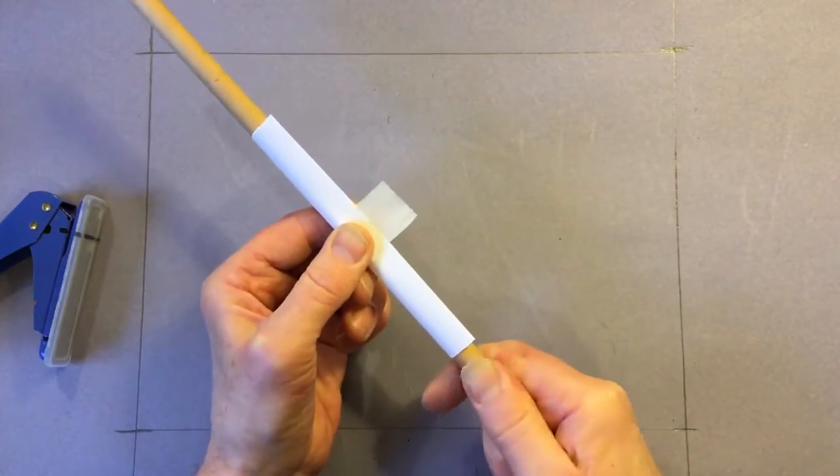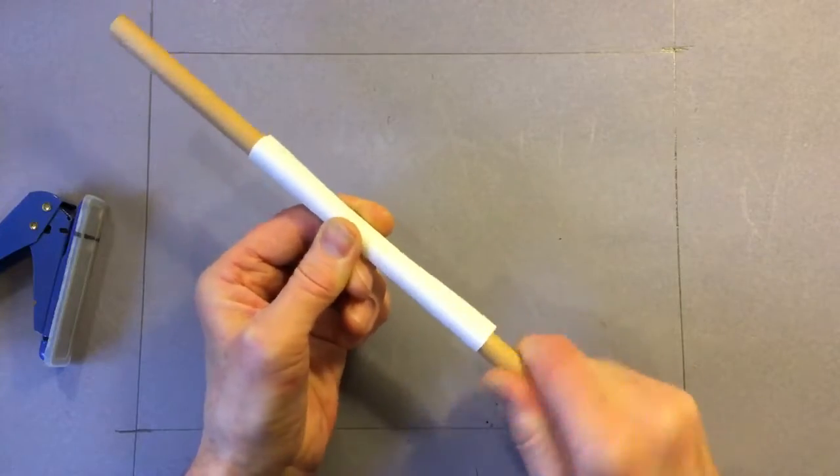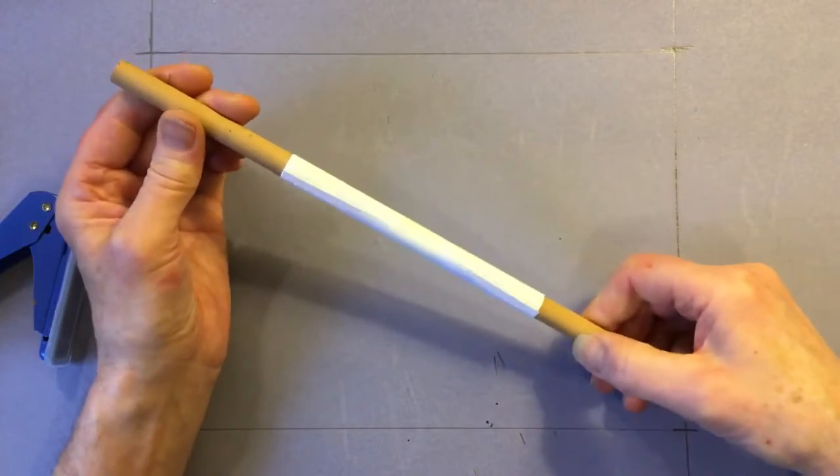That gets all the air bubbles out and then watch, rotate the rod and wrap the tape round. And what that does is just squeeze out any air from under the masking tape and makes a nice tight roll.